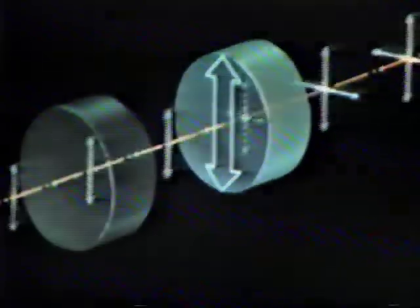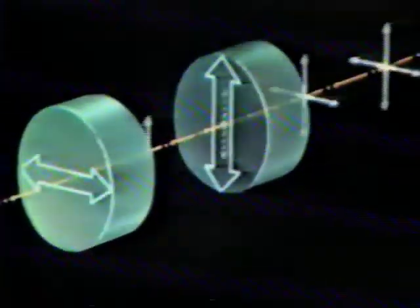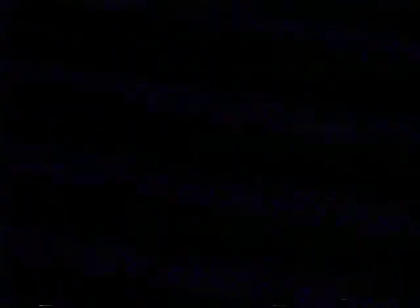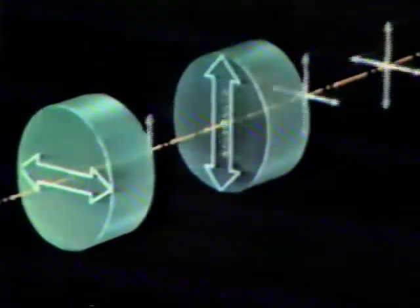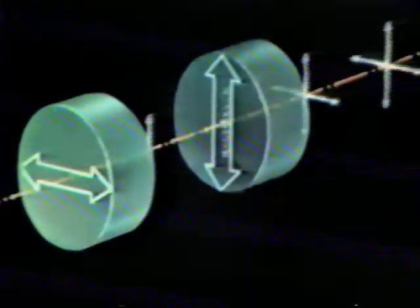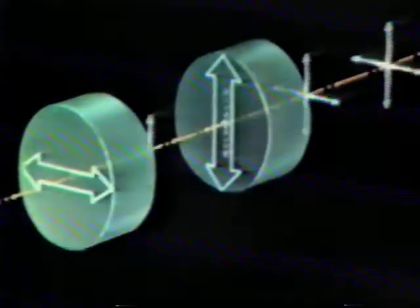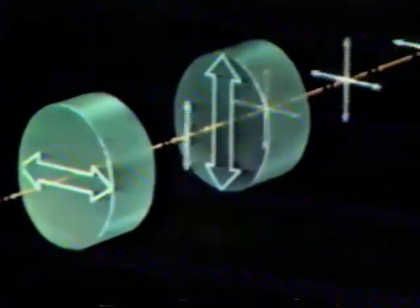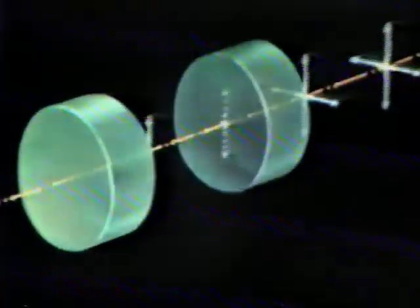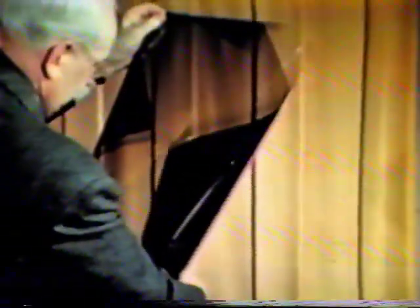If a second polarizing filter, with its axis at right angles to the first, is placed in the polarized beam, the vertically polarized light is absorbed by the filter, and nothing gets through. The polarizers are crossed. For purposes of demonstration, the filters in this diagram are shown to be quite thick. Actually, the modern polarizing material, Polaroid film, is an extremely thin sheet.